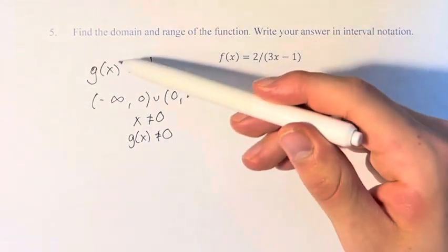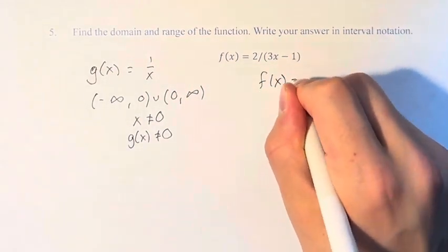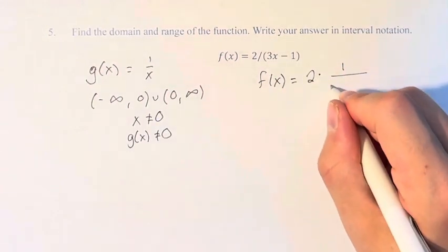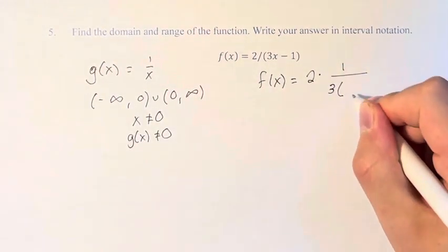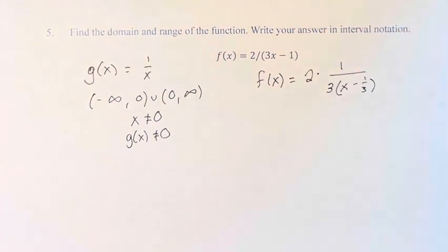f(x) is g(x) with transformations applied. So we have f(x) equals 2 times 1 over 3 times x minus 1 third. I'm rearranging this so it's a little bit clearer to see what we're doing.